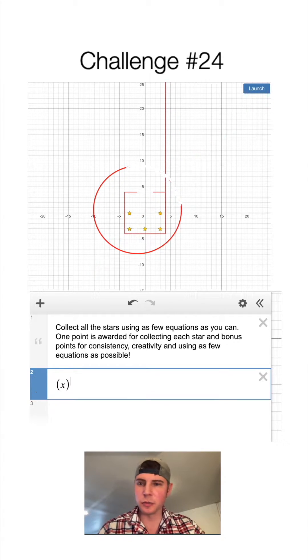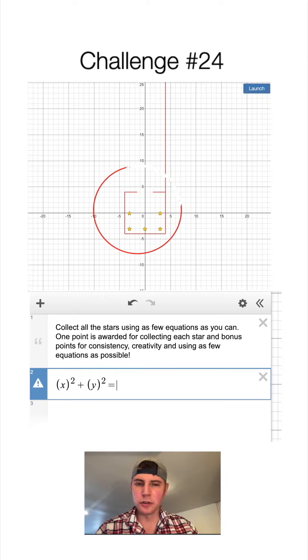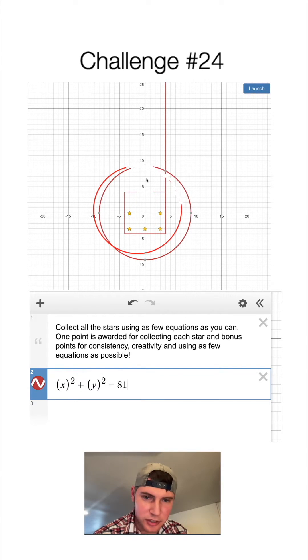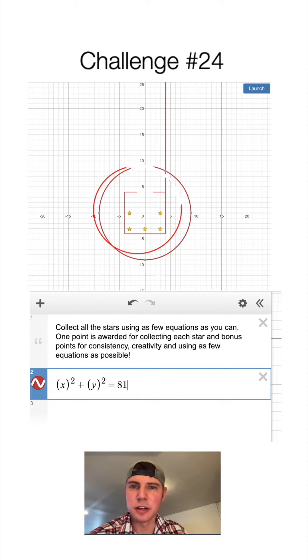The equation of a circle would be x squared plus y squared equals, so I want a radius of about nine. So in the formula, we would do nine squared or in other words, 81. That looks about the right size to me. So I'll get rid of my other one.